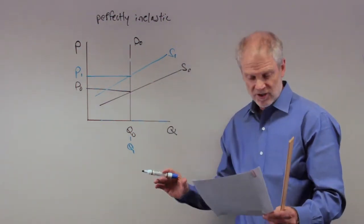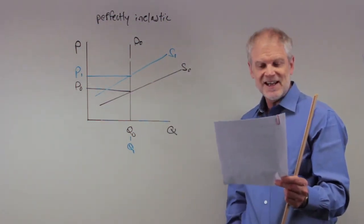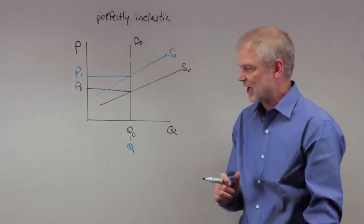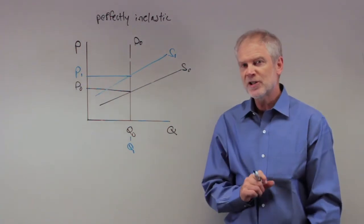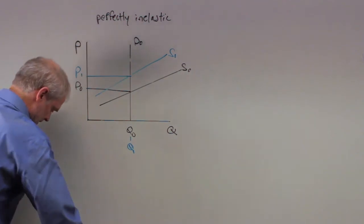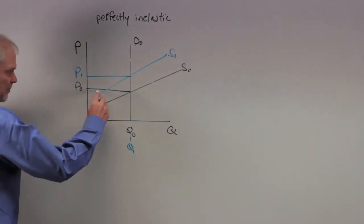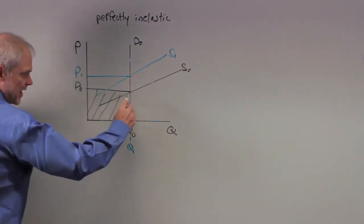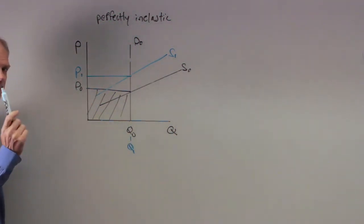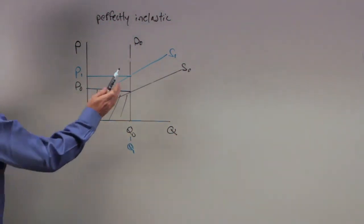And the last one is D: buyers' total expenditures on the good is unchanged. This I like, I don't like the answer I just like it as an example. This says what? That the buyer's expenditures would be this area, that's the price they pay times how many the buyers purchased. That is before the shift back in supply.